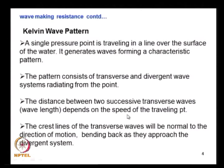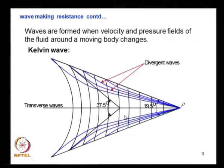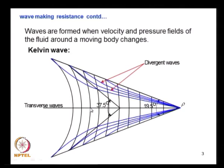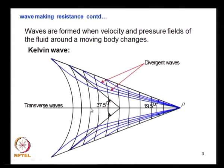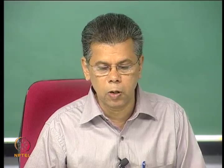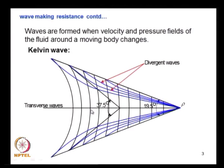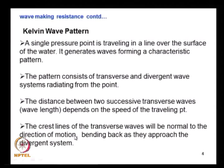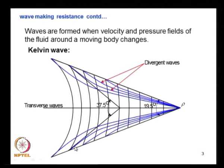The Kelvin wave pattern involves a single pressure point travelling over a still water surface, generating divergent and transverse waves. The distance between two successive transverse wave crests — the wavelength — depends on the speed of the moving point or ship. The crest lines of the transverse waves are normal to the direction of motion, bending backward as they approach and join the divergent wave system. That is the pattern of the Kelvin wave.